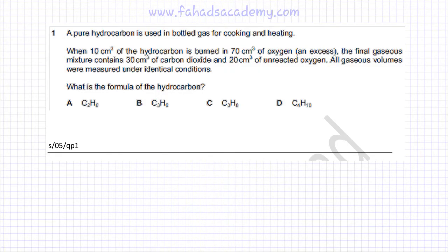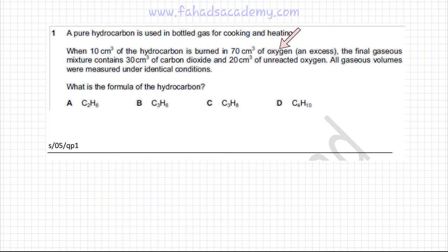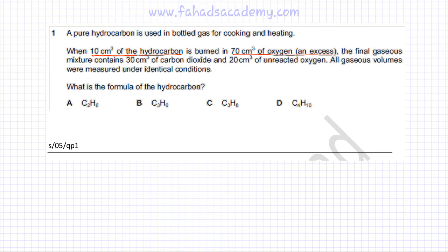This question is related to combustion analysis and deals with the combustion of a pure hydrocarbon used in bottled gas for cooking and heating. 10 cm³ of the hydrocarbon is burned in 70 cm³ of oxygen in excess, which means not all the oxygen is reacting. The final products contain 30 cm³ of carbon dioxide and there is still 20 cm³ of unreacted oxygen.